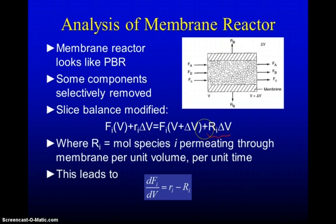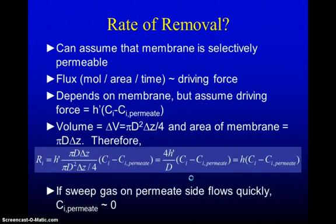We'd express this as the rate of removal per unit of volume. If we just use this expression and we take the limit as the differential volume approaches zero, we would get that the rate of change of the flow rate of species I with respect to the volume is given by the rate of reaction which is what we always have minus the rate of removal due to the membrane. As long as we know something about the transport through the membrane we can describe our system.